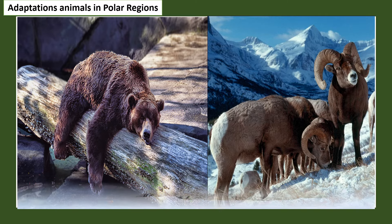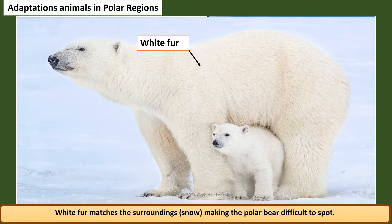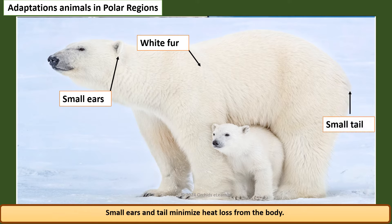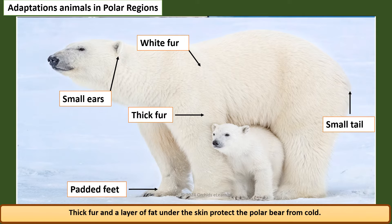The polar bear has several adaptations to survive in polar regions. White fur matches the surrounding snow, making the polar bear difficult to spot. Small ears and tail minimize heat loss from the body. Padded feet help the polar bear walk in the snow. Thick fur and a layer of fat under the skin protect the polar bear from cold.